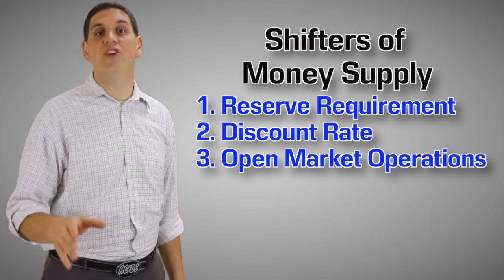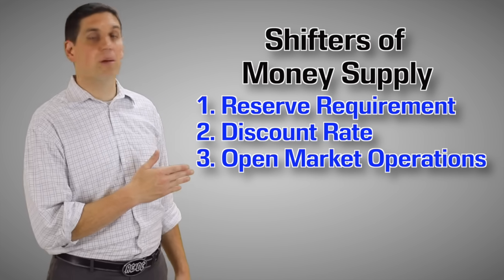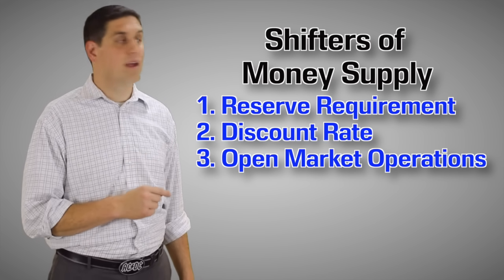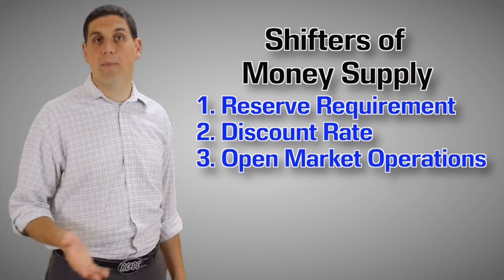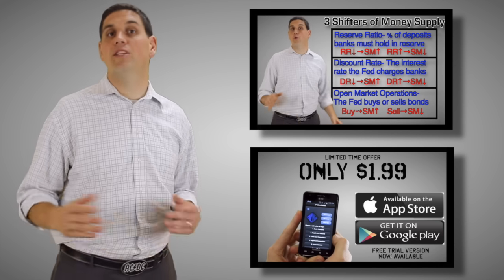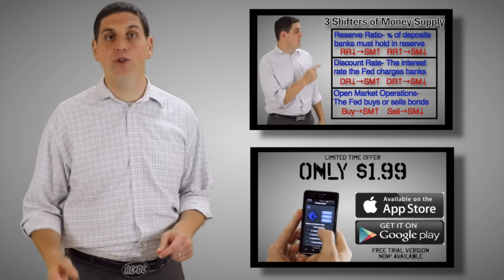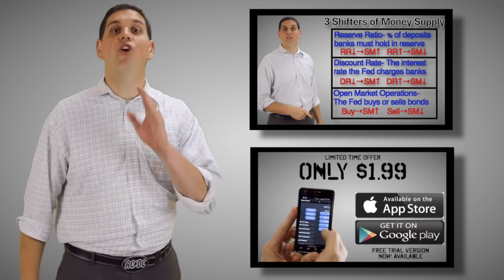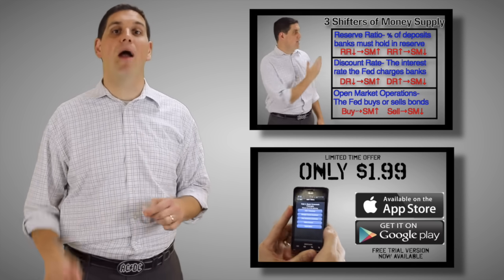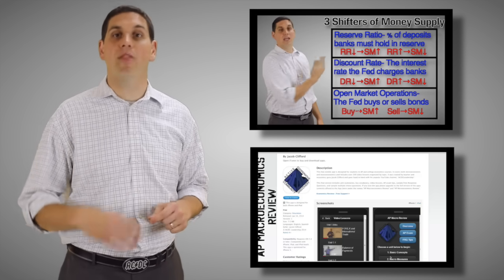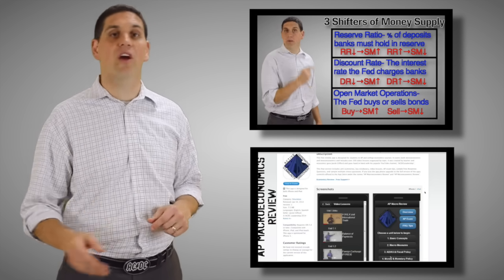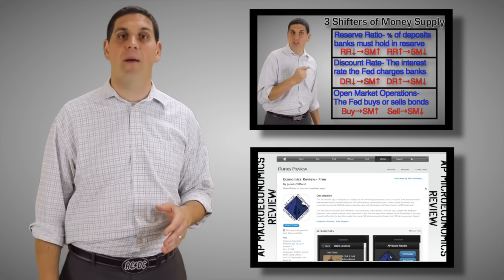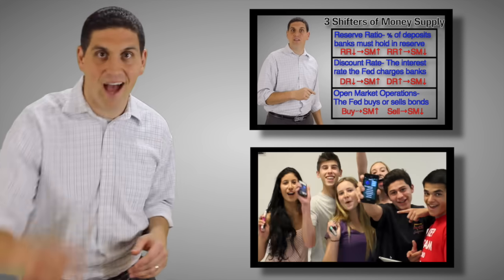There are three shifters of the money supply: the reserve requirement, the discount rate, and open market operations. But to learn more about those, you've got to watch a different video. Don't forget to check out my review apps and all the other videos covering all the concepts of AP Macroeconomics. Till next time.